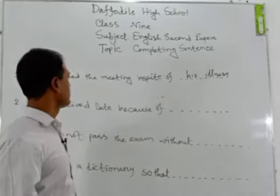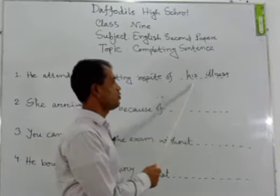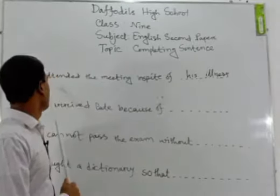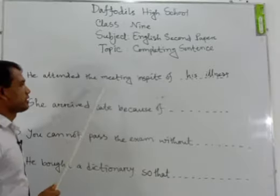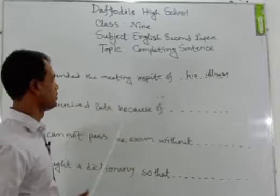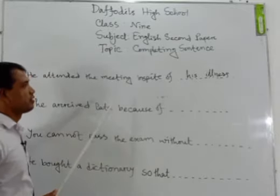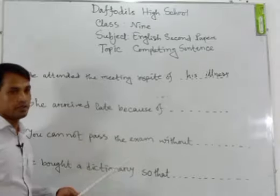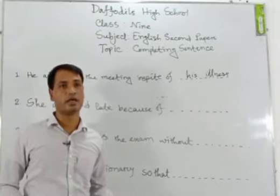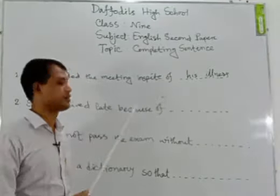We can complete this sentence with a noun, noun phrase, gerund, or gerund phrase. Our sentence has now been completed. Look at this sentence: "He attended the meeting in spite of his illness." This means that the subject has an illness, yet he attended the meeting. We know that usually a sick or ill person can't attend a meeting, yet he has done it.